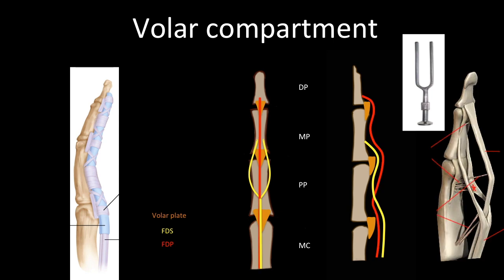The third structure is the flexor digitorum profundus tendon. FDS is superficial to FDP up to the base of the proximal phalanx. After that, the FDS divides into two tendon slips, forming a loop or gap, and the FDP passes through this loop and becomes superficial to FDS. The FDP then runs all the way to attach to the base of the distal phalanx. A key mnemonic: S for S — the Superficial tendon Splits and attaches to the middle phalanx, while the Profundus runs in the midline and attaches to the distal phalanx.